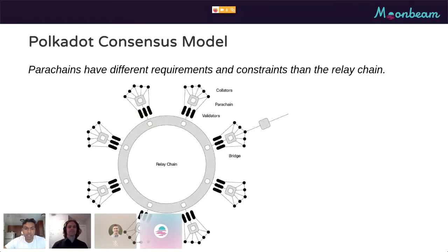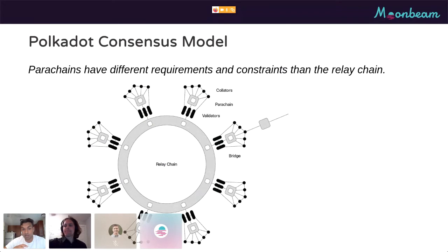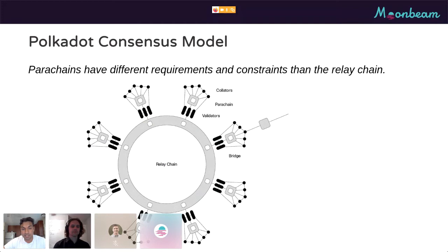In the Polkadot consensus model, there is one relay chain and many parachains, and Moonbeam is a parachain. The relay chain negotiates the passing of messages between all parachains and unites them under a single consensus process. Based on this model, parachains have fewer execution resources — they're limited in what they can include in their runtime logic. So that motivates a simpler, more efficient design for parachain staking as well as parachain consensus, because we don't have the resources that the relay chain has.